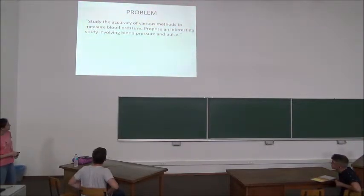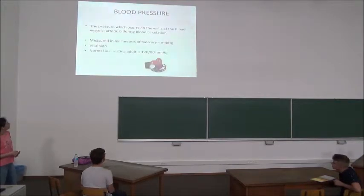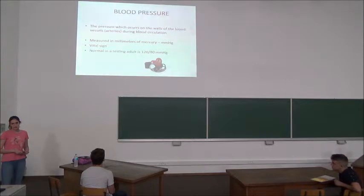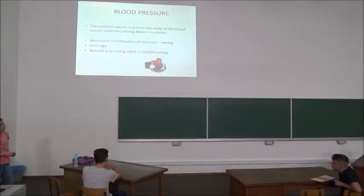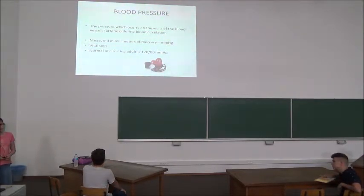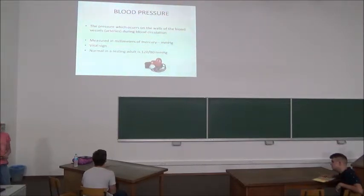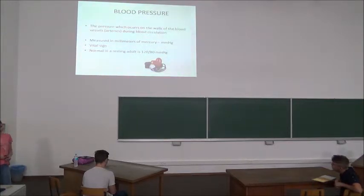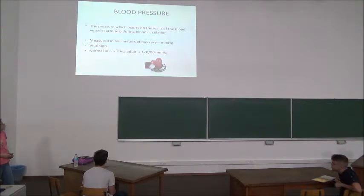I proposed an interesting study involving blood pressure and pulse. Before I start talking about what I did, here are some basics about heart rate and blood pressure. Blood pressure is the pressure which occurs on the walls of the blood vessels during circulation, and it's one of the vital signs, as well as the heart rate. Normal blood pressure in adolescent adults is 120 over 80, and it's measured in millimeters of mercury.